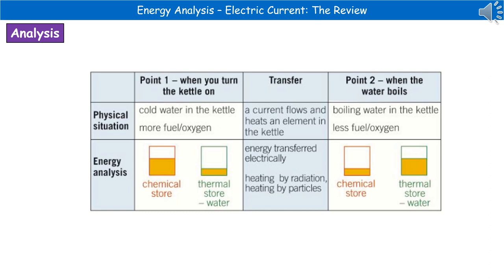Drawing the energy analysis diagram, we have two stores: the chemical store and the thermal store for water. Initially there's a reasonable amount in the chemical store and only a small amount in the thermal store of the water. That energy is transferred by electrical means and by heating by radiation and heating by particles, resulting in a lower amount in the chemical store and a greater amount in the thermal store of the water.